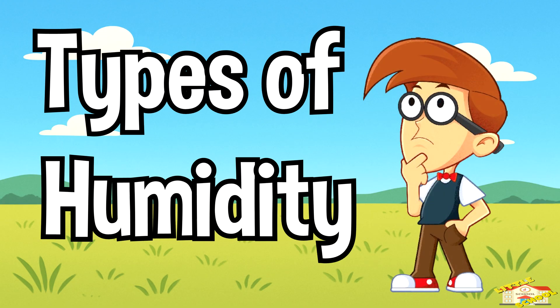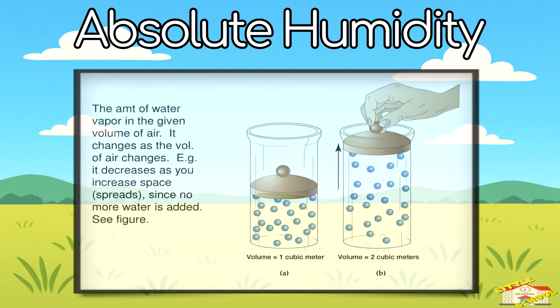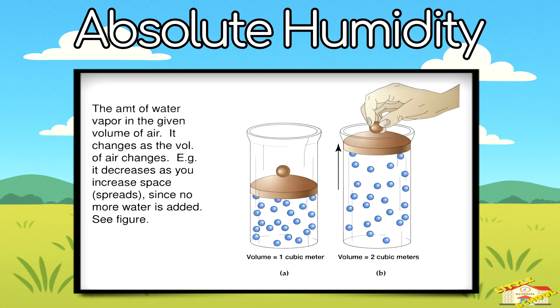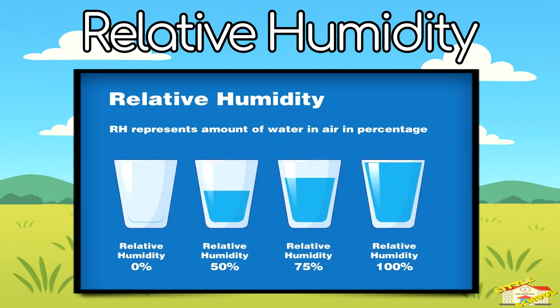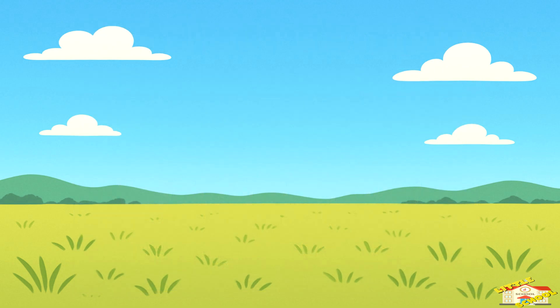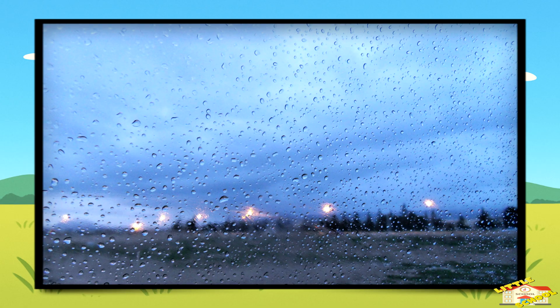Let's go over the types of humidity. Absolute humidity is the total amount of water vapor in the air. Relative humidity tells us how full the air is with water vapor compared to the maximum it can hold. For example, if the relative humidity is 100%, the air is completely full of water vapor.